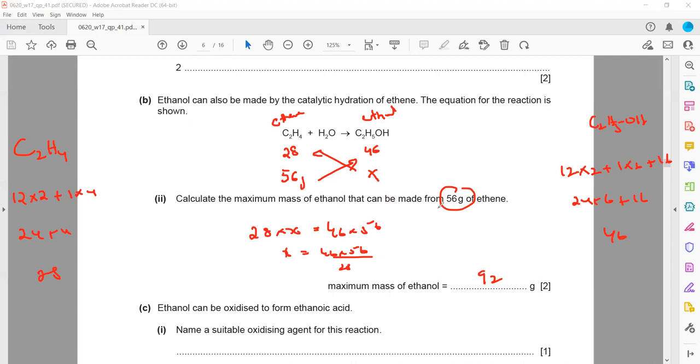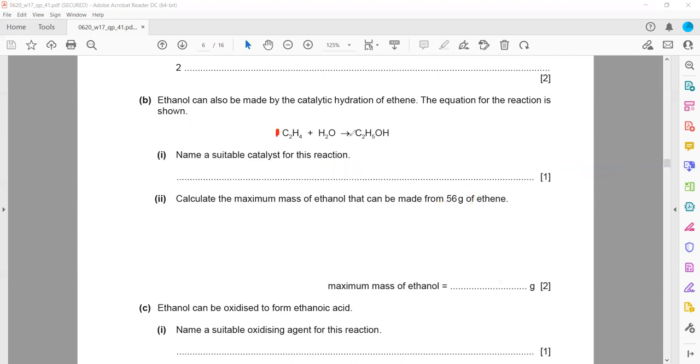Because the mass was given, I took the ratio of the mass. If the moles were given, I will take the ratio of the moles, and the ratio of the moles will be 1 is to 1. But because the mass is given, I took the ratio of the mass.